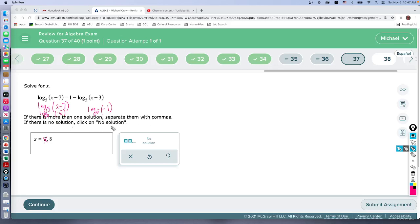So if I plug in 8 here, 8 minus 7 is positive 1, 8 minus 3 is positive 5. So these ones will work.